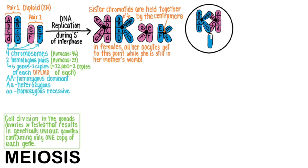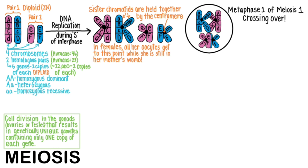Now the gonad cells line up the homologous pairs. This is metaphase 1 of meiosis 1. During this time, the floppy ends of each sister chromatid can stick to the other copy of that gene on the homologous chromosome. The longer the arm of the sister chromatid, the more likely those gene copies are to get swapped. We call this crossing over — in Greek, it's chiasmata for cross. This lovely chiasmata allows homologous pairs to exchange DNA. As if there weren't already a great deal of variety from each homologous chromosome's gene variations, this crossing over process makes it impossible that any two gametes ever produced throughout the whole of human history could ever be identical.